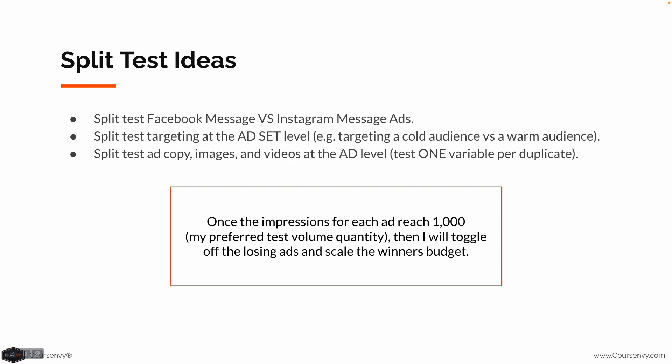For split test ideas: run one campaign for Facebook and one for Instagram message ads. At the ad set level, split test targeting — target a cold audience with detailed targeting like small business owners for one, and a warm custom audience such as website visitors excluding buyers for another. At the ad level, split test the ad copy, images, and message ads themselves. Remember: one variable per campaign so you can identify which variable is driving the most results. Once you reach 1,000 impressions, toggle off losing ads and scale budgets for the winners.